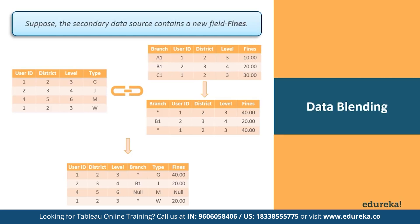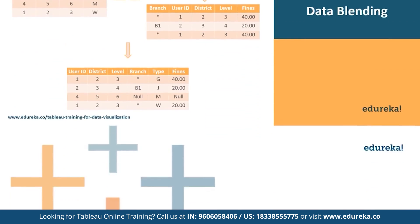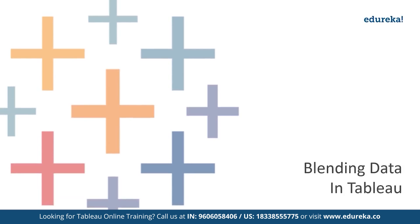As for the previous example, a row in the left table does not have a corresponding row for the fines field, and that is why it is indicated by the second null value. Now, how can you blend your data?